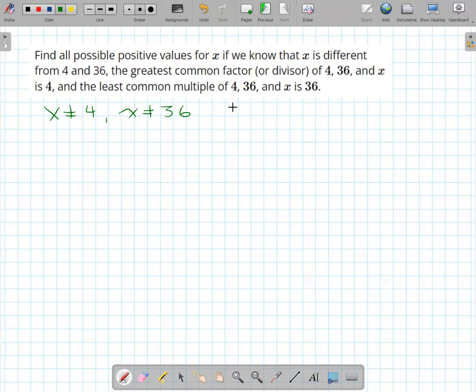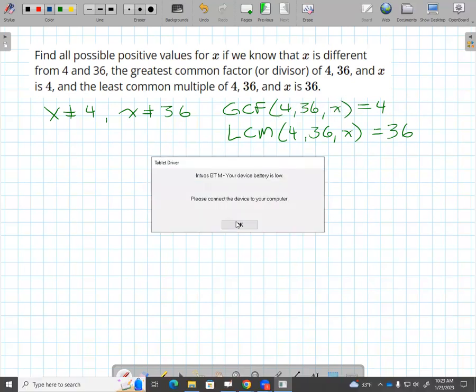Greatest common factor of 4, 36, and x is 4, and the least common multiple of 4, 36, and x is 36. So let's see. What can we do with this? So what can x be so that the greatest common factor is 4?